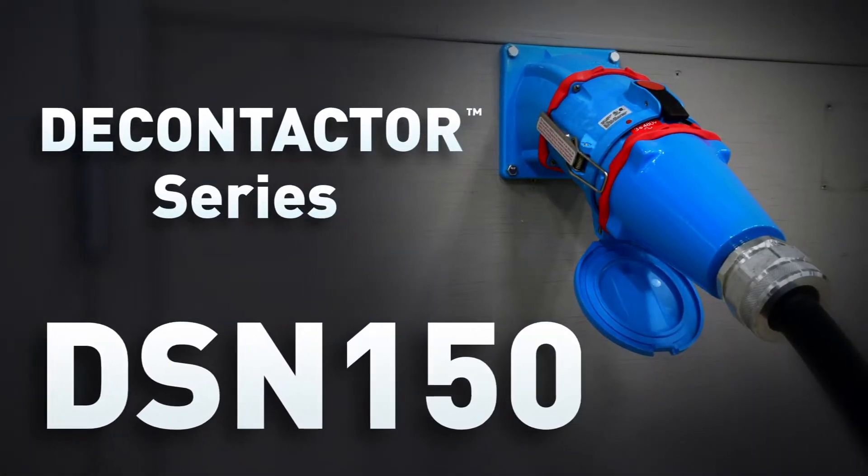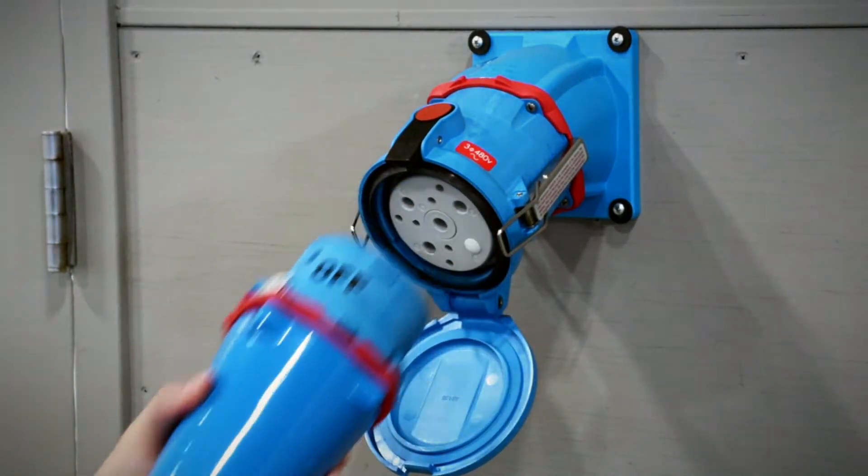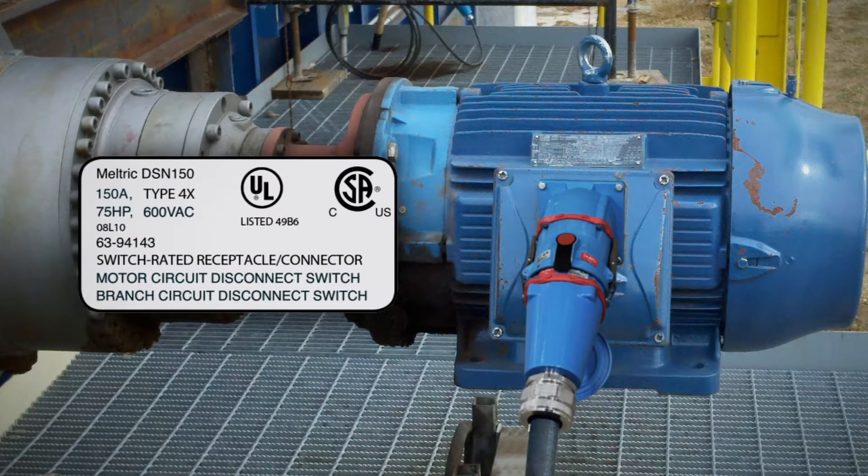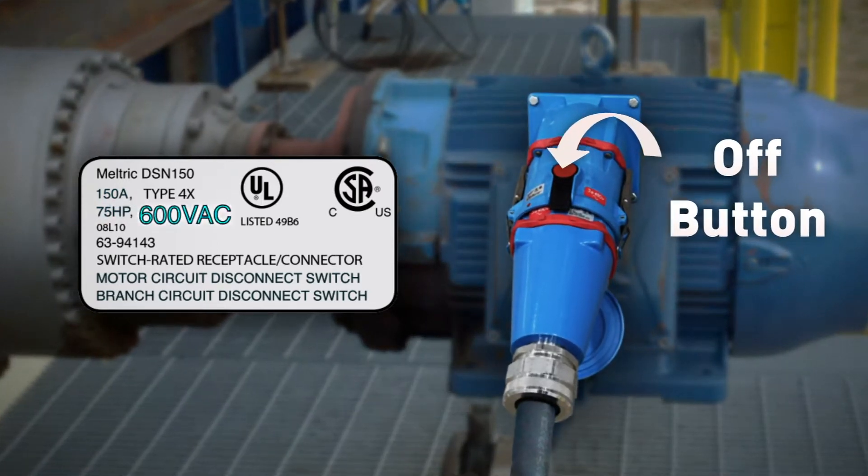The Meltric DSN-150 is a high-performance plug and receptacle that's part of the switch rated series. It's suitable for branch or motor circuit disconnect switching on applications up to 150 amps, 75 horsepower, 600 volts.